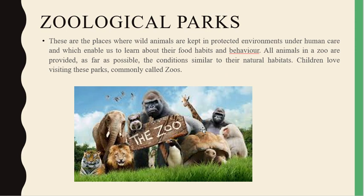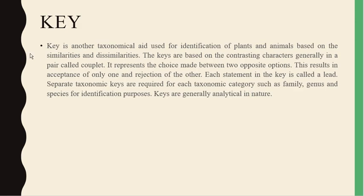Another example is zoological parks. These are places where wild animals are kept in protective environments under human care, which enables us to learn about their food habits and behavior. All animals in a zoo are provided, as far as possible, conditions similar to their natural habitat. Children love visiting these parks, commonly called zoos.